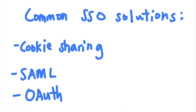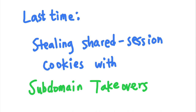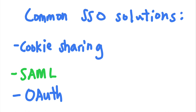Welcome back to the Security Simplified series. Last time, we talked about some of the most common ways applications implement single sign-on, and how attackers can use subdomain takeovers to bypass SSO protection based on shared session cookies. This time, let's talk about some common misconfigurations of SAML authentication, and how they can be exploited by attackers to bypass access control in a single sign-on system.